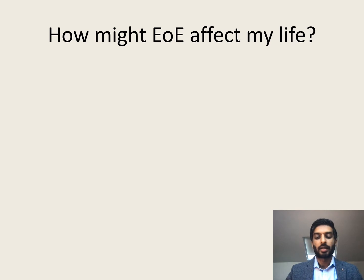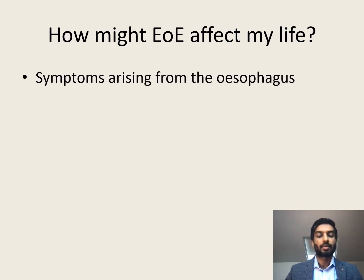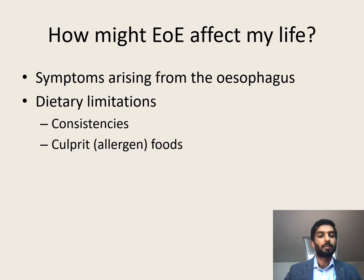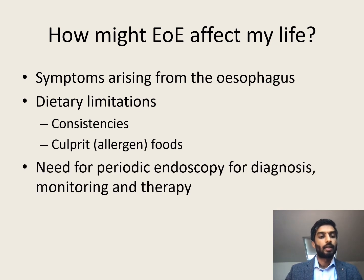How might EOE affect my life? We already discussed some of the esophageal symptoms. Some patients with EOE may also have to have dietary limitations — one way is in the types of consistencies that can be eaten. For example, some patients are not able to eat very hard, firm, chunky textures very easily. Another way the diet might be limited is the need to avoid certain culprit or allergen foods — foods identified as triggers for that patient. Patients with EOE might also have to have periodic endoscopies for diagnosis, monitoring, and sometimes to deliver therapy.